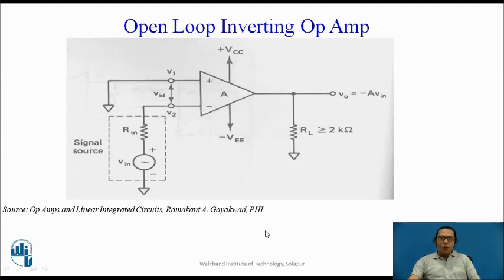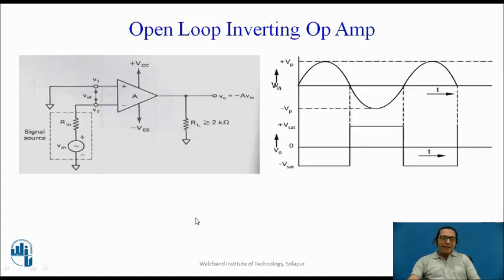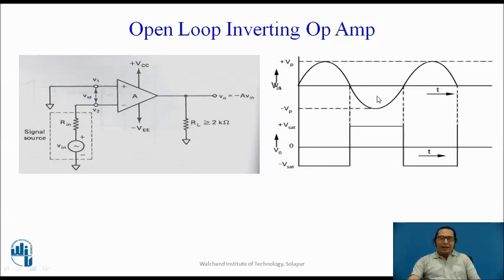The next circuit is called an open-loop inverting op-amp. This circuit differs from the previous one because now the input signal is applied to the inverting input and the non-inverting input is connected to ground. To draw the output, we apply the same golden rules: if the non-inverting input is greater than the inverting input, output is +Vsat; if the inverting input is greater, output is −Vsat. For the half cycle where the inverting input is positive and greater than zero, the output is −Vsat. For the half cycle where the inverting input is negative, the output is +Vsat. So again, we get a square wave output.